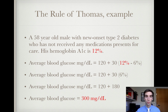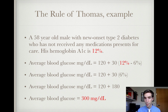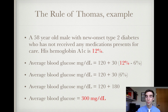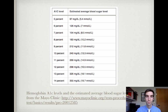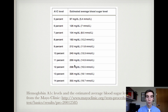For a 58-year-old male with new onset type 2 diabetes who has not received any medications, his hemoglobin A1c is found to be 12%. Using the formula: 12% minus 6 equals 6, multiplied by 30 gives 180, plus 120 gives an average blood glucose of 300 milligrams per deciliter. Looking at the Mayo Clinic chart, 12% is 298 milligrams per deciliter — about what we get from the Rule of Thomas.